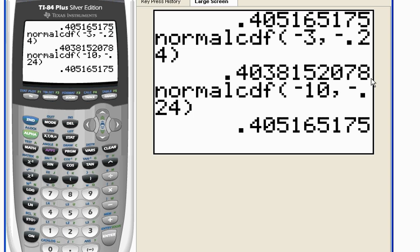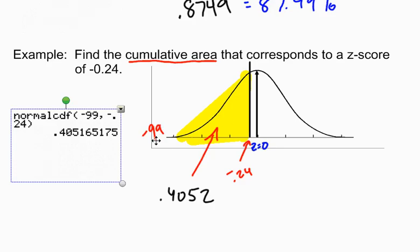In fact, it gives me the same value as before. So that's why I'm saying that just to be on the safe side, I'm going to use negative 99 if I'm finding the area to the left of a z-score. And in relation to that, if I were going to the right, I would use positive 99 as my right-hand boundary. So there's another example.